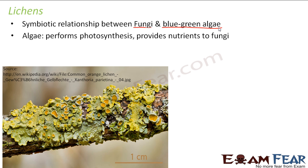The blue-green algae are cyanobacteria — they have chlorophyll and can prepare their own food by photosynthesis. So the algae perform photosynthesis and prepare food. The fungi can then get their food from the algae — the algae act like a cook, preparing food which the fungi consume.